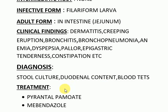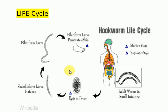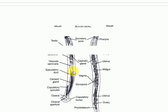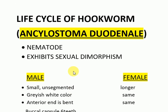Treatment is pyrantel pamoate and mebendazole. Prevention and control includes proper sewage disposal, wearing of shoes and gloves, and treatment of carrier and diseased persons. Stool microscopy is done for eggs, and duodenal content sometimes reveals eggs. This was about the hookworm or Ancylostoma duodenale — thanks for watching.